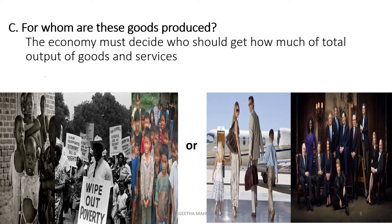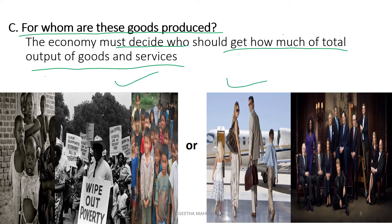The third basic problem of an economy is for whom are these goods produced — that is, for whom to produce. The economy must decide who should get how much of the total output of goods and services. The society is divided into two categories: rich and poor. The producer has to decide for whom he is producing. If he is producing for the poor section of society, they will produce inferior or low quality goods as these will be available at a cheaper rate. If they produce for rich people, they will produce luxurious or high quality goods, as rich people are able to buy those goods and services.